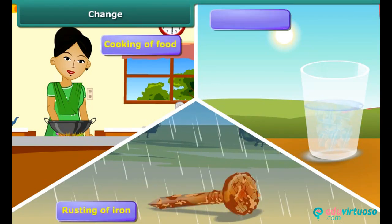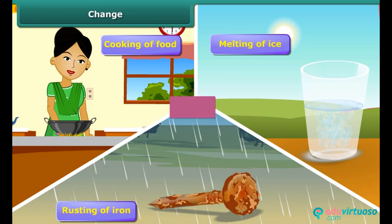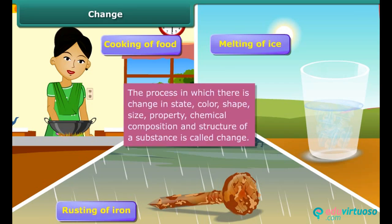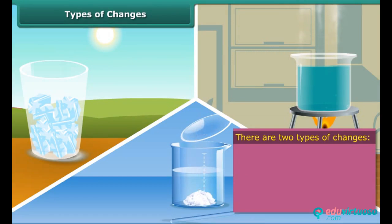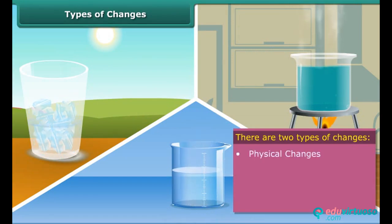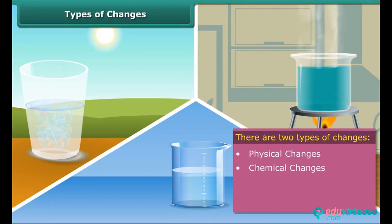Change is a process in which properties like state, color, shape, size, chemical composition, and structure of a substance are altered. Changes are of two types: physical change and chemical change.